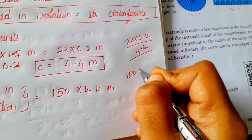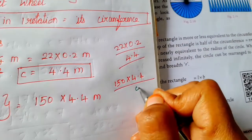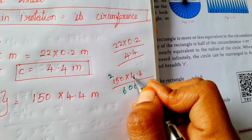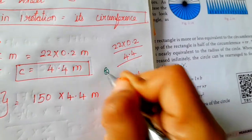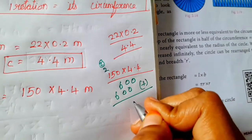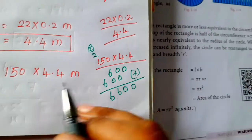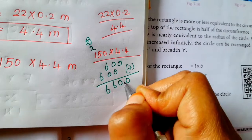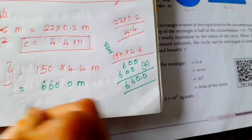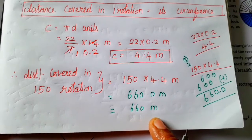Now multiply 150 into 4.4. Working: 4 into 0 is 0; 4 fives are 20, carry 2; 1 four is 4, plus 2 is 6. Repeat for the tens: 0, 20, 4 plus 2 is 6. Add: 0, 0, 6, 6. Place the decimal point — one decimal place — giving 660.0 meter, which is 660 meter. Therefore, distance covered in 150 rotations is equal to 660 meter.